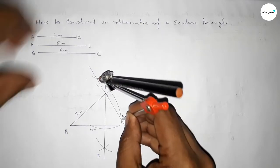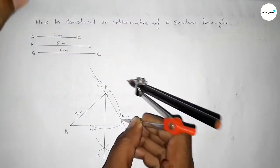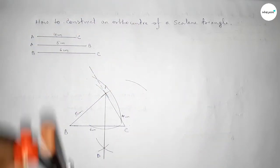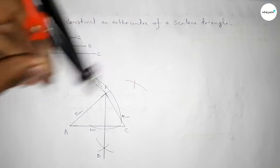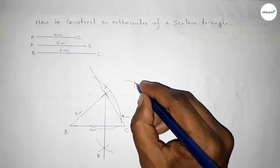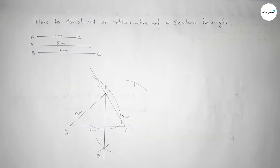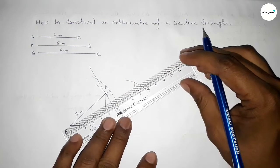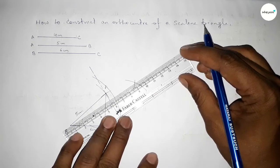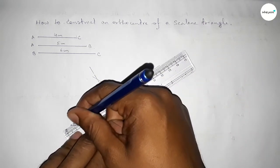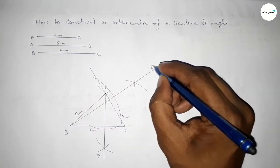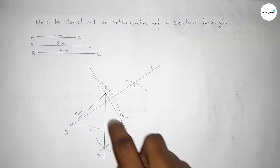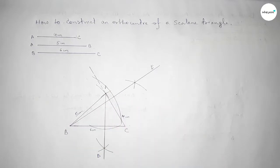Putting the compass on each intersection and taking greater than half of the arc length, drawing arcs here. Putting the compass on the other side and cutting here. Both curves intersect at a point. Joining this perpendicular line and taking here point E.